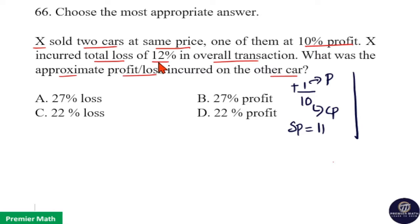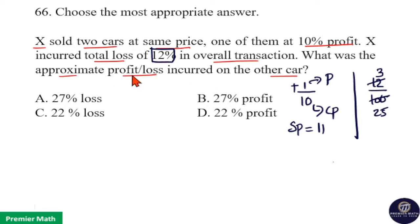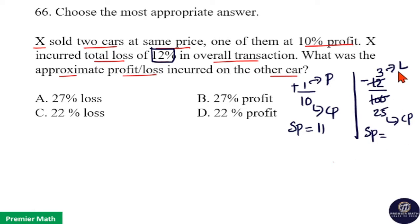X lost 12% in the overall transaction. 12% means 12/100. Simplifying: 4 goes 3 times into 12 and 25 times into 100, giving 3/25. This is a total loss, so it is minus 12/100. Here 3 parts is the loss and 25 parts is the cost price. Sell price equals cost price minus loss, which is 25 minus 3 equals 22 parts.